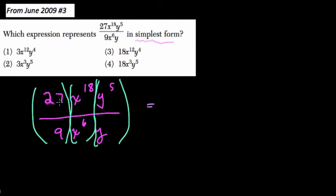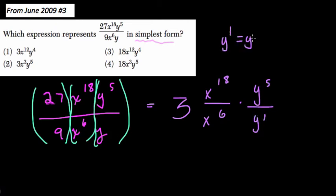So that means you can really think of this as 27 over 9, which is just 3, x to the 18th over x to the 6th, and then y to the 5th over y, which is really just y to the 5th over y to the 1st. y to the 1st does equal y. Those two things are identical.